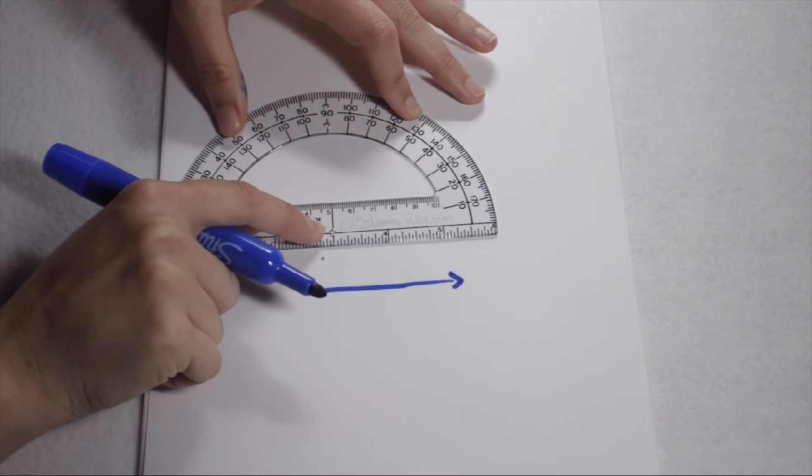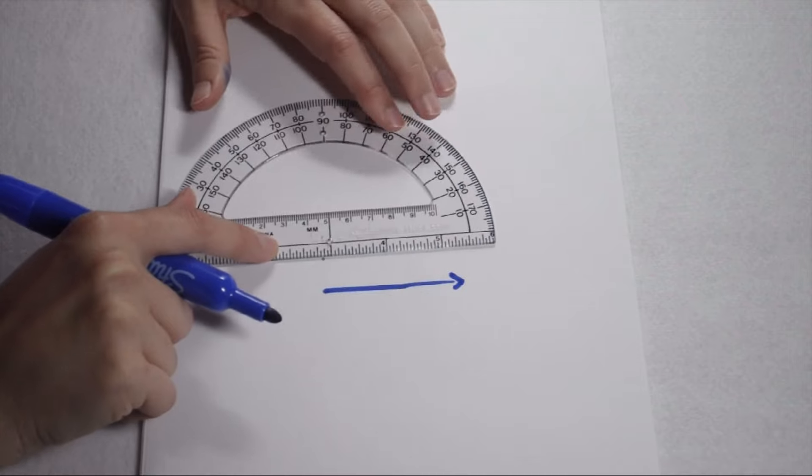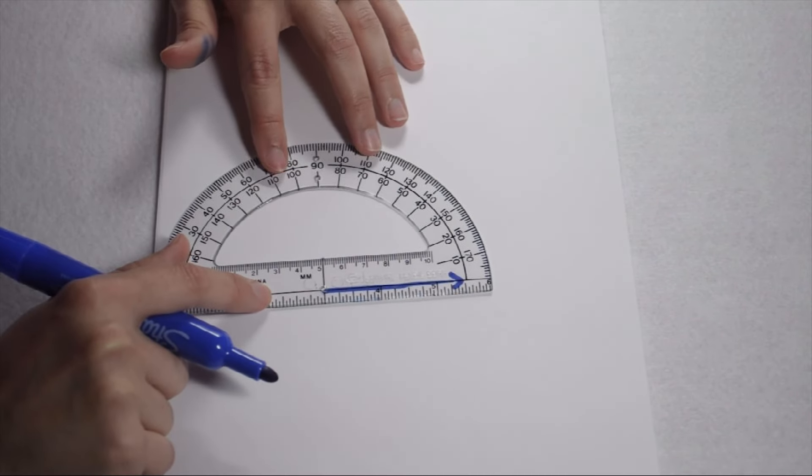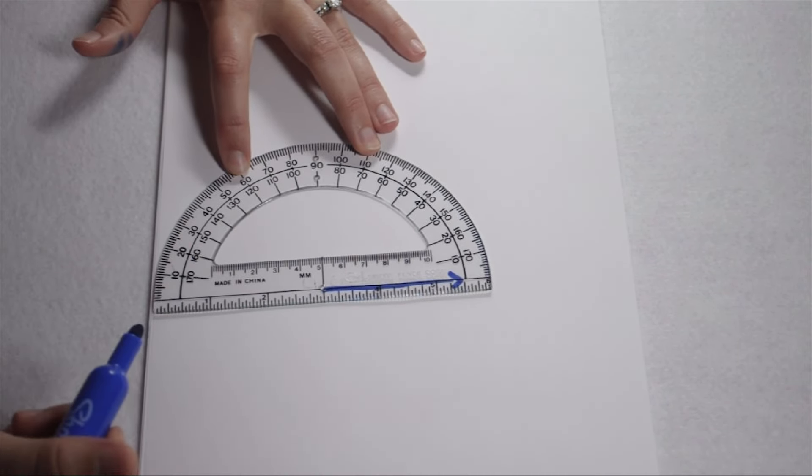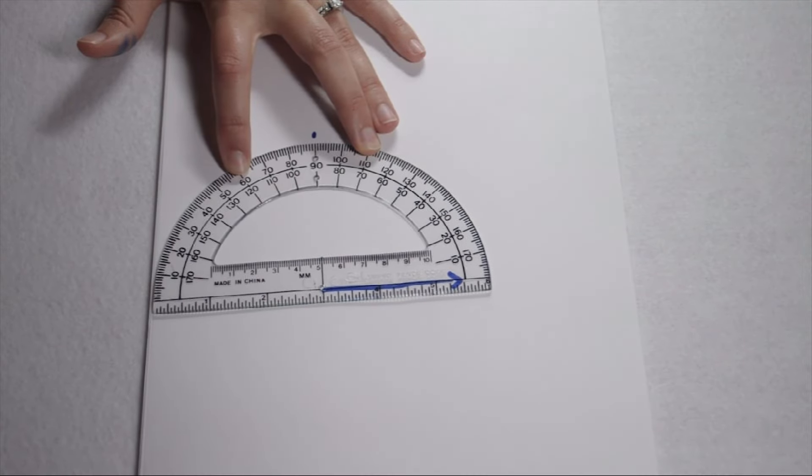On my protractor, I have my circle here in the middle to line up my vertex, and then I can line up my ray along that black line. When I do, if I want to draw a 90 degree angle, I can simply come around to 90 degrees and make a mark where it's going to be.